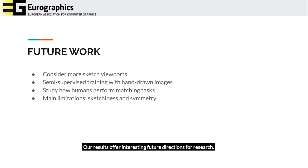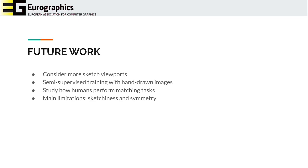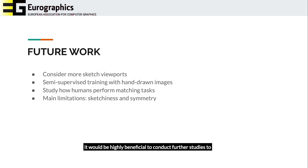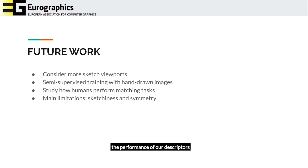Our results offer interesting future directions for research. For example, investigating whether it is possible to incorporate other views without introducing too much ambiguity in the descriptor space. In addition, we would like to explore how to incorporate semi-supervised hand-drawn images into the training to improve the generalization power of our descriptors. Finally, it would be highly beneficial to conduct further studies to better understand how humans perform matching tasks over line drawings. We also want to address the main limitations we encountered, often related to extreme lighting and rough construction lines. Symmetric objects can also damage the performance of our descriptors. Exploring ways to actively involve users in refining correspondences would be an interesting future line of work.